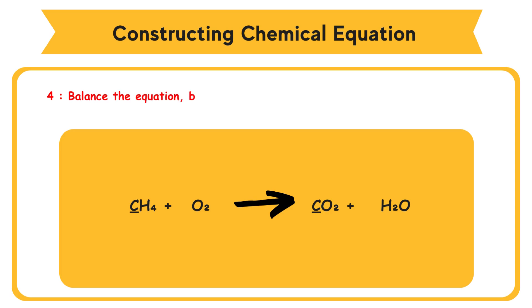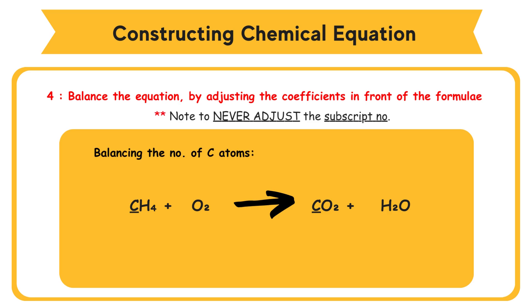Step 4: Balance the equation by adjusting the coefficients in front of the formulae. Note to never adjust the subscript numbers in the formulae, because this will change the chemical formulae of the substances. Balance all types of atoms one at a time. Balancing the number of C atoms: CH4 plus O2 reacts to produce CO2 plus H2O.